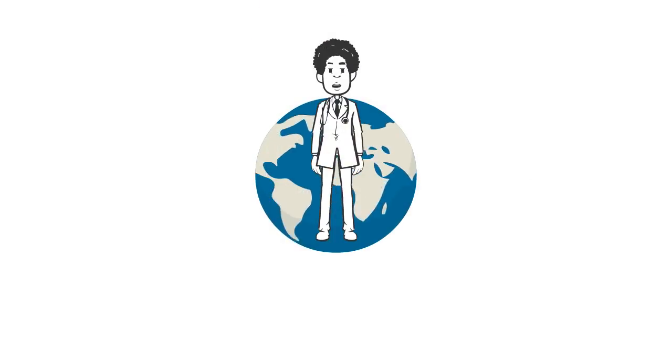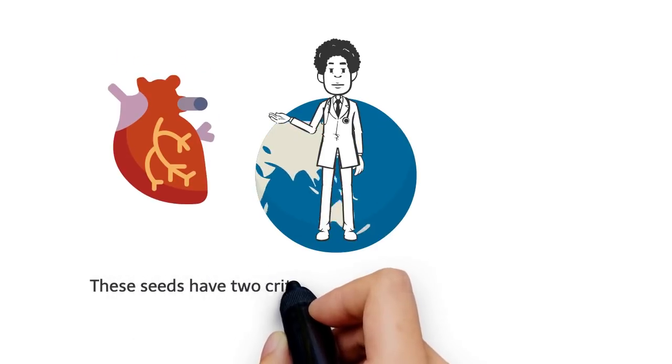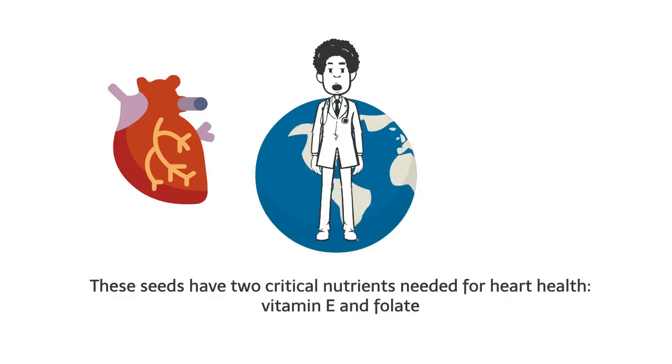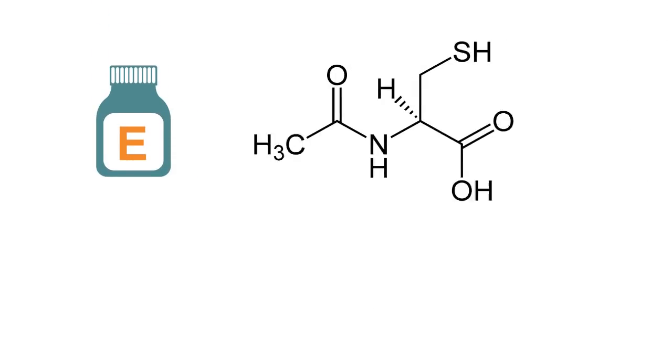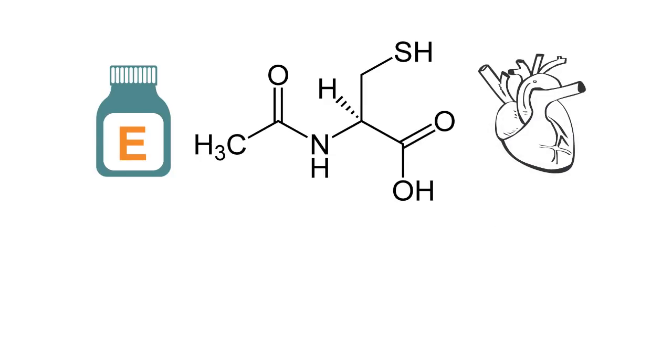Promote heart health. According to the Global Healing Center, sunflower seeds can be good for your cardiovascular system. These seeds have two critical nutrients needed for heart health: vitamin E and folate. Vitamin E has an antioxidant function and if regularly consumed may reduce the chances of heart disease.